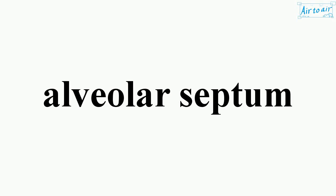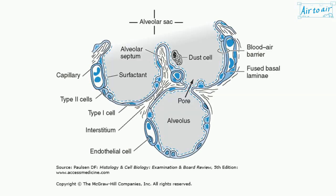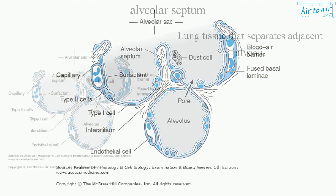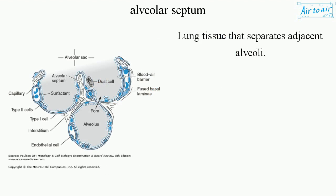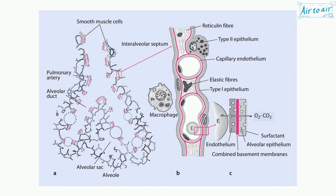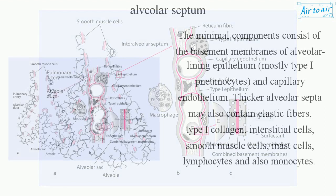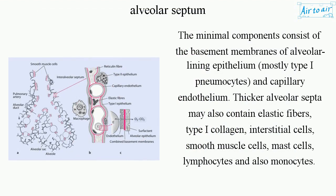Alveolar septum: lung tissue that separates adjacent alveoli. The minimal components consist of the basement membranes of alveolar lining epithelium, mostly type I pneumocytes, and capillary endothelium.